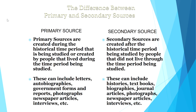Before we start talking about that, let's take a quick moment to distinguish between primary and secondary sources for historical research. Primary sources are created during the historical time period that is being studied, or created by people who lived during that time period being studied, and these can include letters, autobiographies, government forms, photographs, newspaper articles, and interviews. Secondary sources are created after the historical time period being studied by people who did not live through the time period being studied.